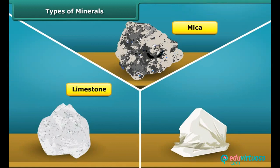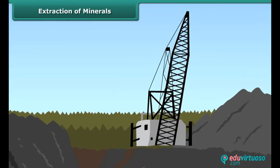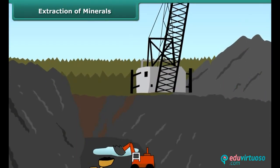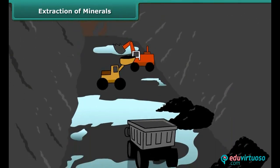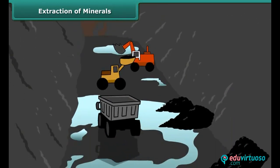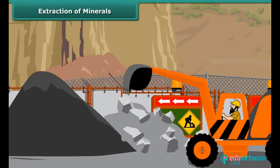Rocks from which minerals are mined are known as ores. The minerals are taken out from rocks buried under the earth's surface — this is known as mining. Minerals that lie at shallow depths are taken out by removing the surface layer.